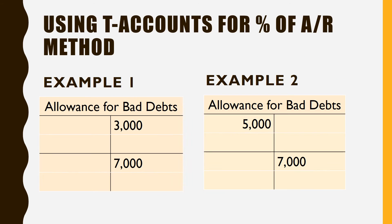An easy way to find that is through T-accounts. In the example we just went through, we have a beginning balance of $3,000, we know it has to be $7,000, so we know our adjustment has to be $4,000. Sometimes the allowance account can actually flip sides on you, and we'll see how that can happen in a second.